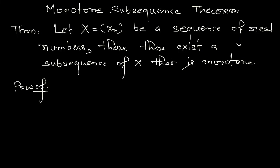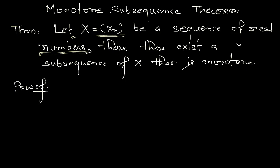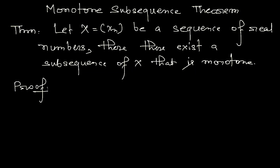In this video we learn about the Bolzano-Weierstrass theorem. In order to prove it, we can use the Monotone Subsequence Theorem, which says that if x is a sequence of real numbers, then there exists a subsequence of that sequence that is monotone. In other words, every sequence has a monotone subsequence.